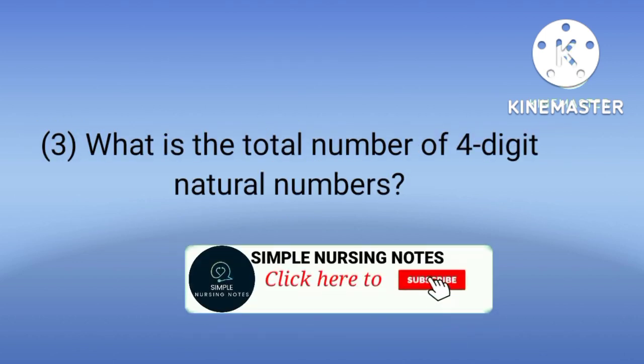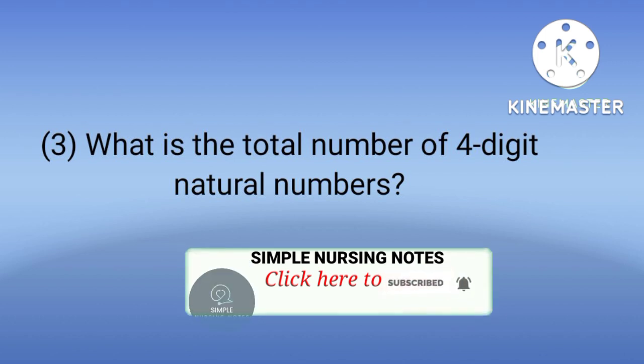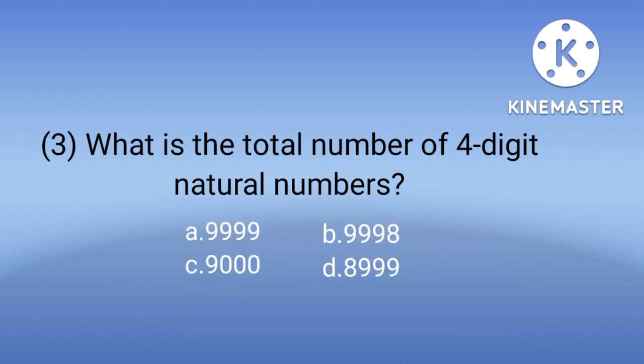Number 3: What is the total number of 4 digit natural numbers? Options are 9999, 9998, 900 and 8999. How will we calculate this answer? The largest 4-digit number is 9999, and the largest 3-digit number is 999. So we subtract the largest 3-digit number from the largest 4-digit number to get the answer. So the answer is C, the total number of 4 digit natural numbers is 9000.